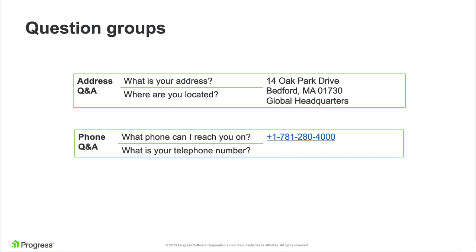The second set of Q&A should be for phone. The user should be able to ask something like, 'What phone can I reach you on?' or 'What is your telephone number?' And the chatbot should respond with plus 1 781 280 4000.